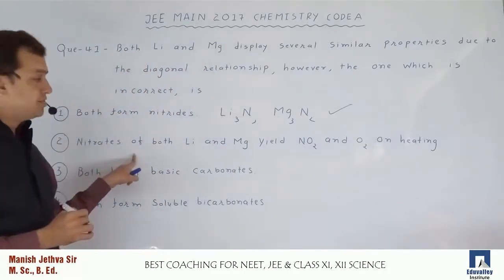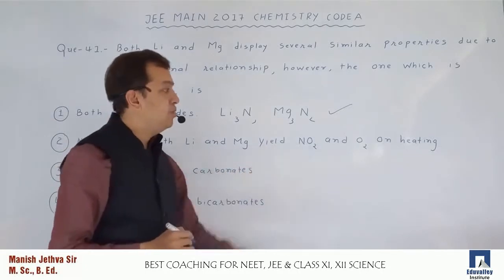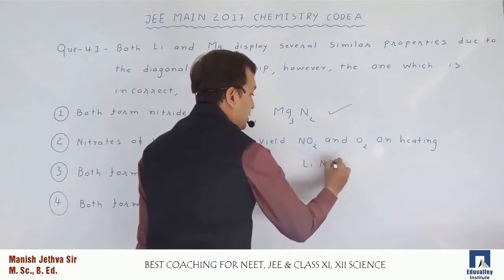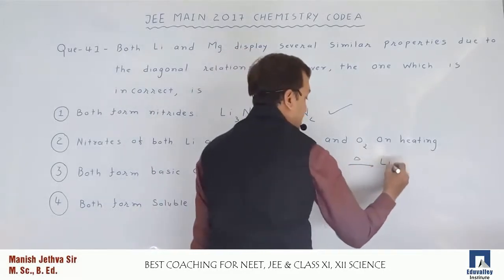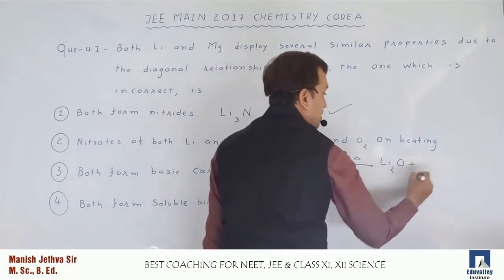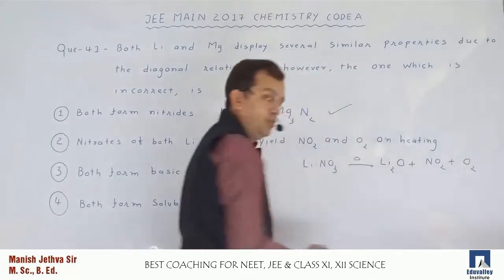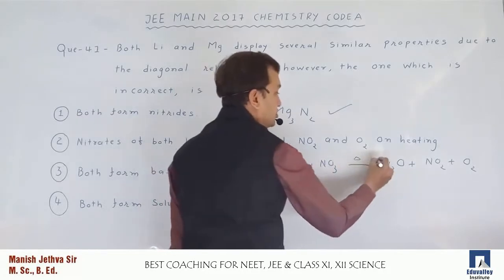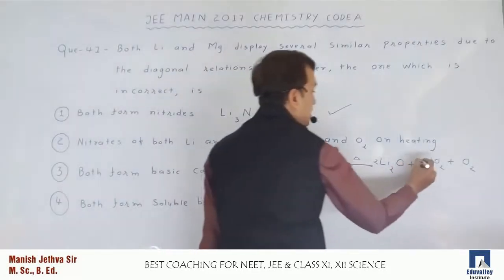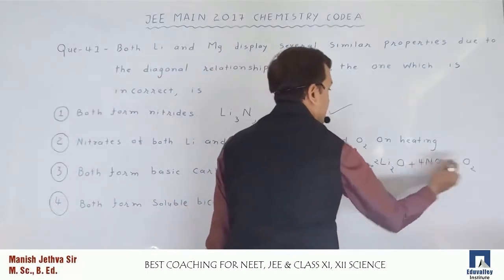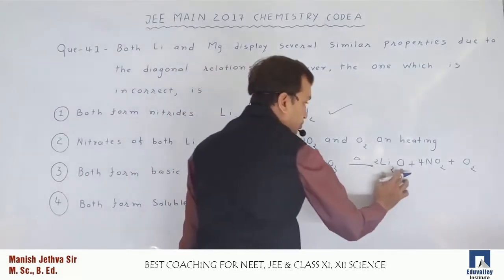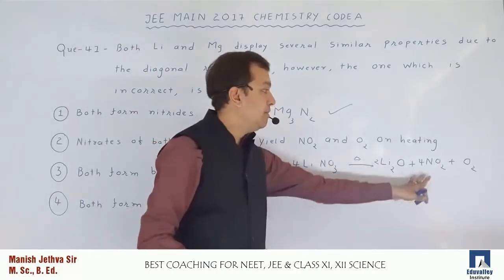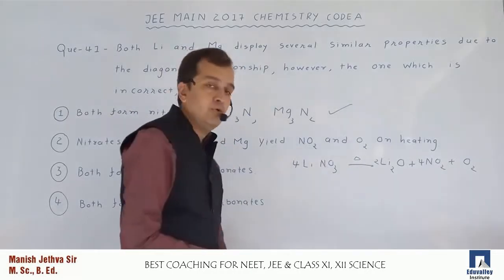The second option: nitrates of both lithium and magnesium yield NO₂ and O₂ on heating. We write the decomposition reaction of LiNO₃. On decomposition, lithium nitrate gives Li₂O plus NO₂ plus O₂. Taking 4 moles of lithium nitrate and balancing: 4 Li, 4 N, and oxygen balances as 12 on each side. So LiNO₃ can produce NO₂ and O₂ — this is correct.